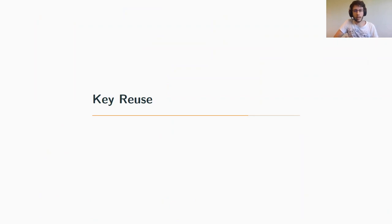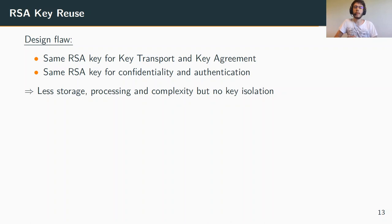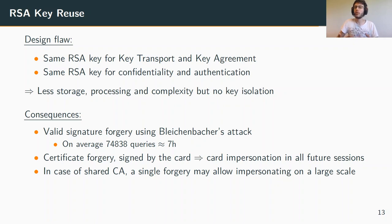Indeed, the same RSA key is used for basically everything: both key transport and key agreement, as well as for confidentiality and authentication. This is a very significant problem. We believe it is done to save on storage and reduce complexity, but it comes at a huge security cost. The attack targeting key transport and the decryption operation can be propagated to the authentication step to forge a signature — for instance, to forge a valid certificate issued by the card with a valid certification chain going up to the certification authority. If the certification authority is shared between multiple cards, such as all cards from the same manufacturer, this allows impersonation on a very large scale.